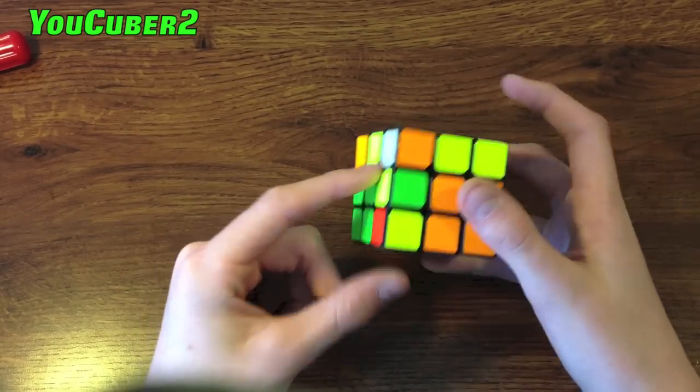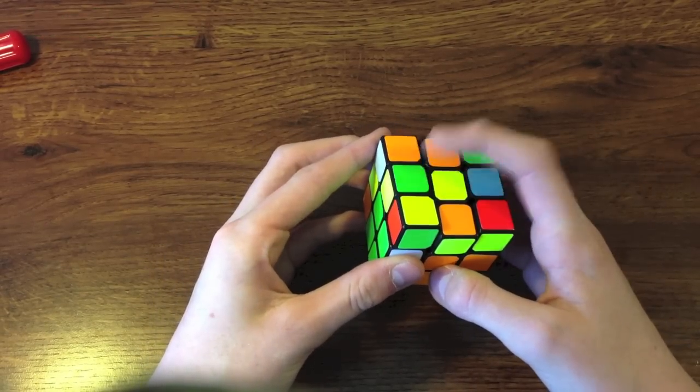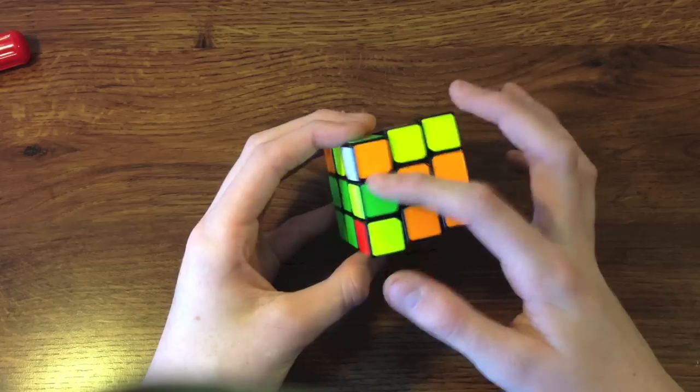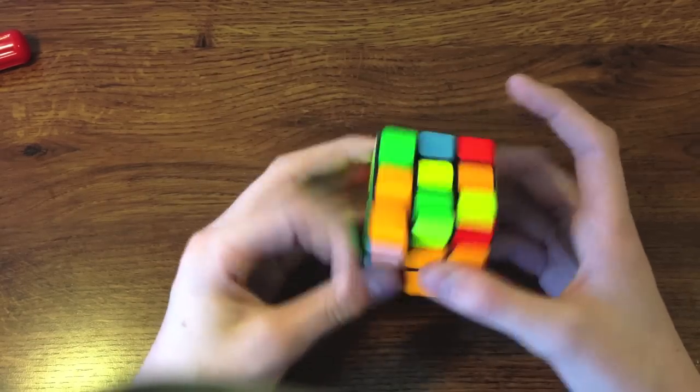So in this case we have all bad edges and I can tell that our last edge for the top cross is bad because to insert this pair here you'd go like that and you'd be lifting this up. So this is going to stay with green on top so it's going to be bad as well. So we're going to have all four bad edges in this case.